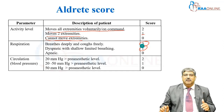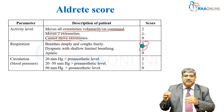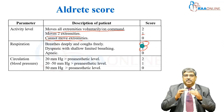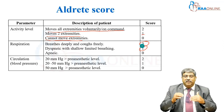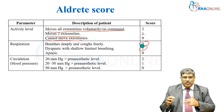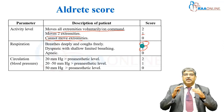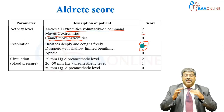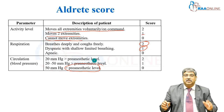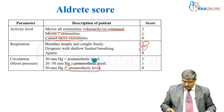For circulation: if the blood pressure is within 20 mmHg of the pre-anesthetic level, the score is 2. Between 20 to 50 mmHg difference scores 1. If greater than 50 mmHg from the pre-anesthetic level, the score is 0.